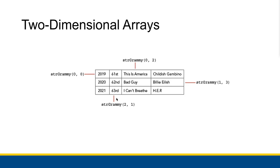For example, we have this string Grammy array. It might look like a mixture of strings and numbers, but it's really important to note that all of these — including the years — are strings. Everything in a two-dimensional array has to be of the same type. We have our rows: 2019 is row zero, 2020 is row one, and 2021 is row two.